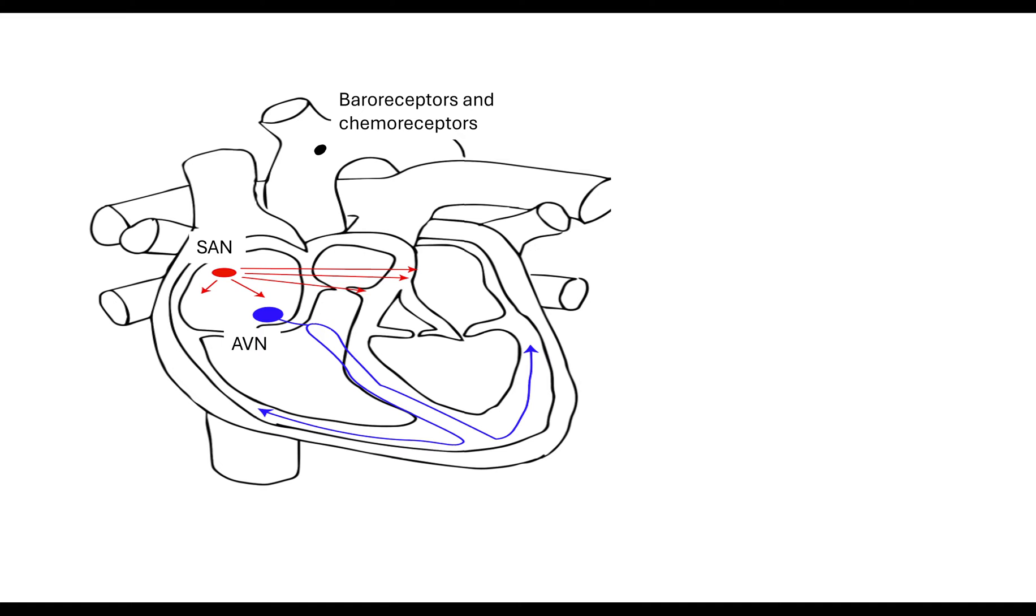So there are two sensory receptors we need to talk about. Our baroreceptors which are to do with pressure, so they are a type of mechanoreceptor and our chemoreceptors. So baroreceptors detect your changes in your blood pressure and your chemoreceptors detect your change in your blood pH.